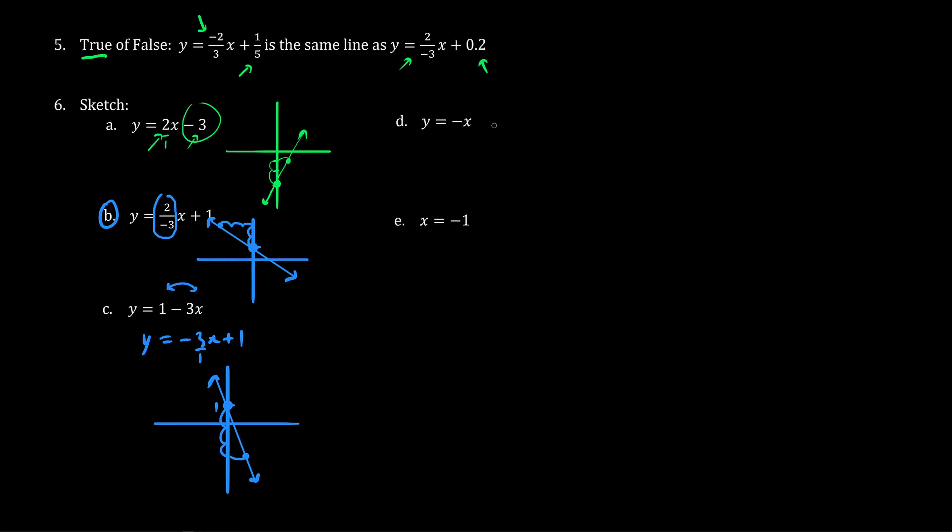As for part D, we have the equation y equals negative one x plus zero. Same thing, there's a hidden negative one slope here. And the y-intercept is zero. So we start at the origin, at zero, and the slope is negative one over one, which means down one, one to the right. And we draw our second point. And as you can see, this line cuts through the origin and is at a 45 degree angle, an angle of depression of 45 degrees.